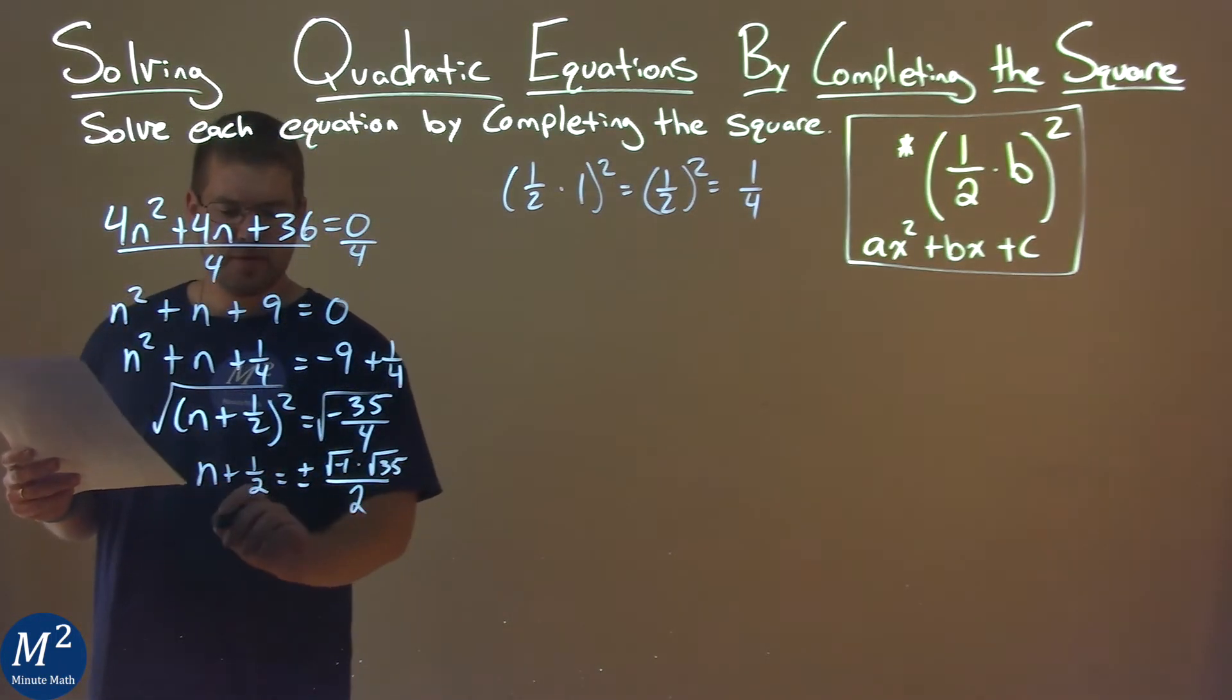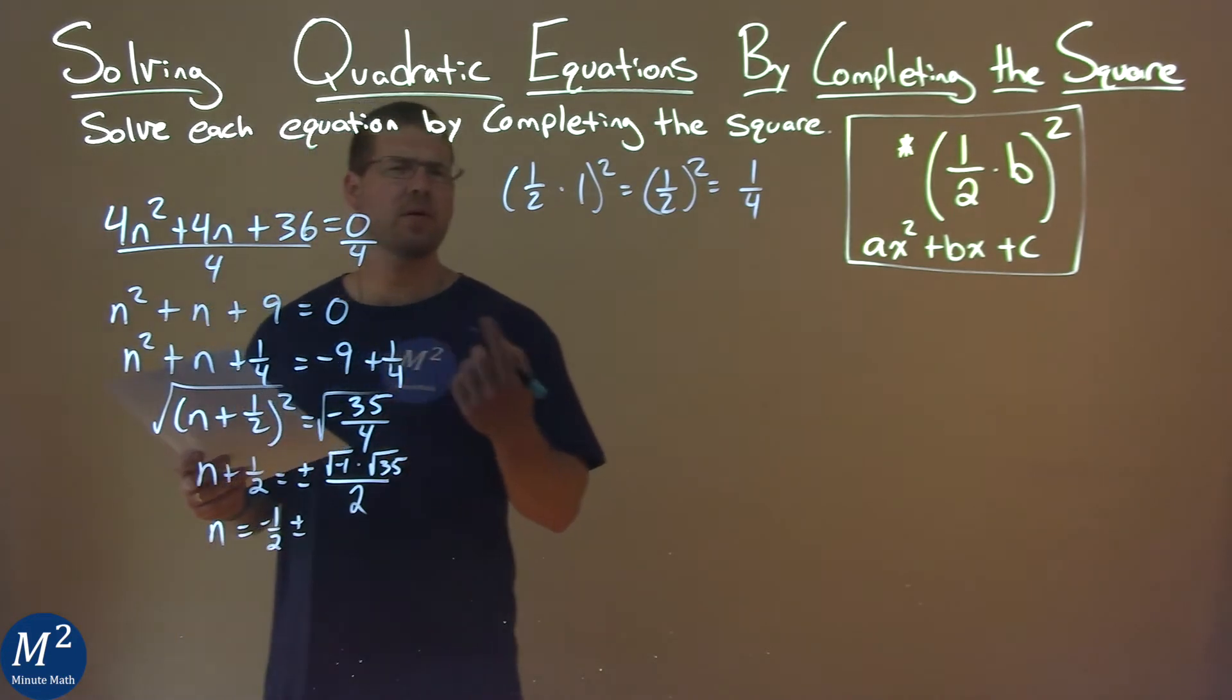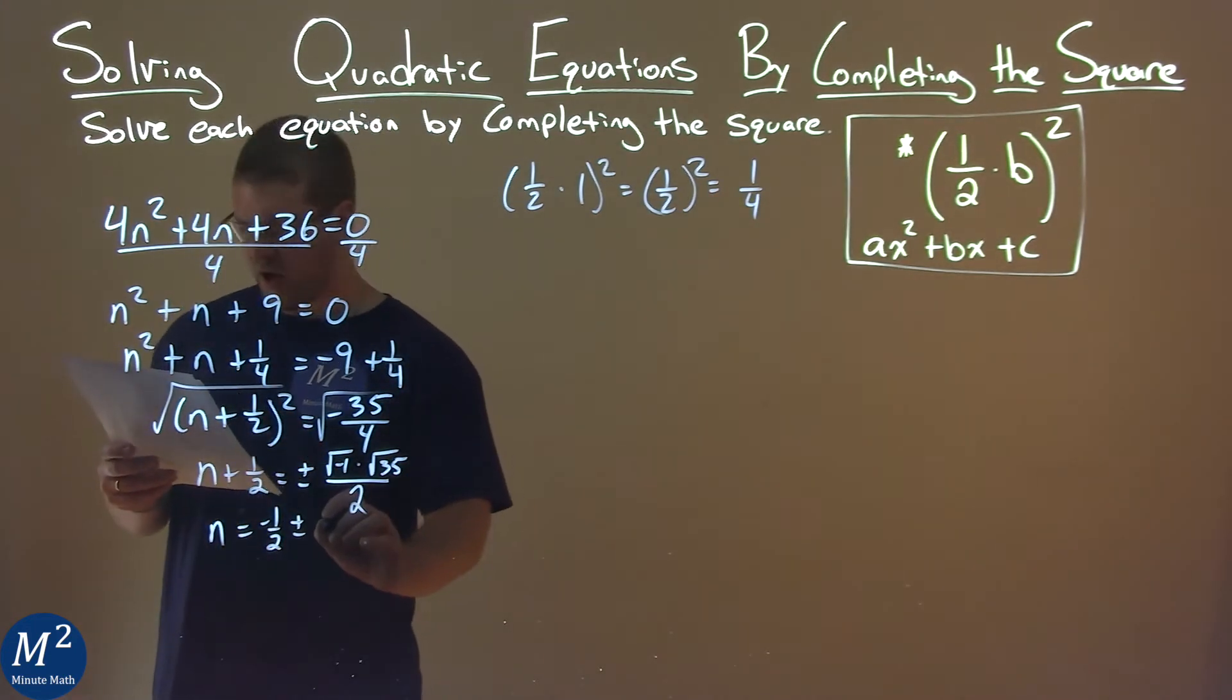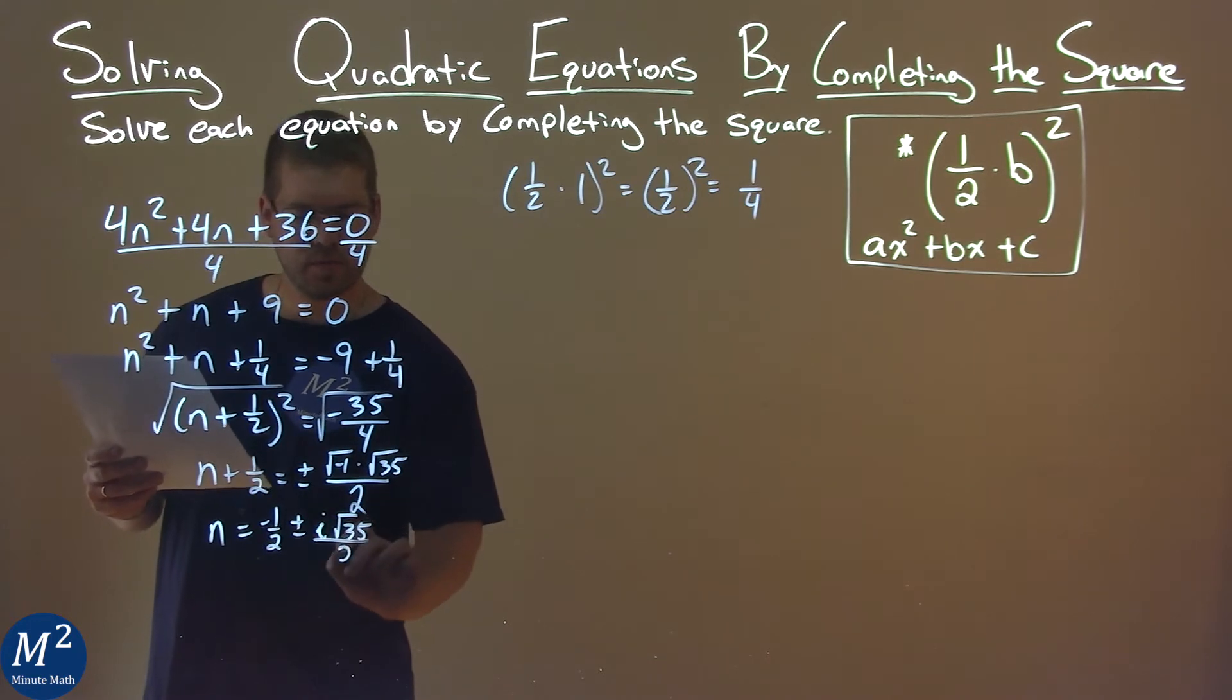So now let's subtract one half from both sides, so n equals negative one half. Then we have plus or minus here, and the square root of negative 1 is i. So we have i square root of 35 over 2.